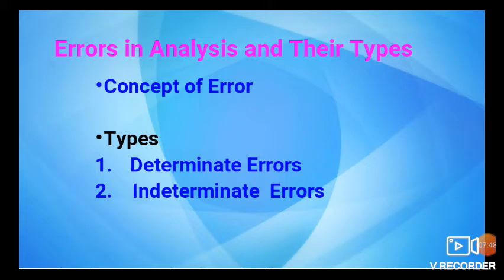There are certain problems regarding the result. Those problems, mistakes, or interruptions are called errors. After an experiment, when you write the results, there are always certain types of problems that occur in your result, which are called errors. Errors are the deviation from the expected result.